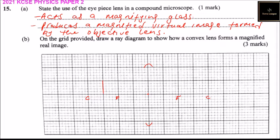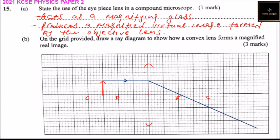We put our object in between the center of curvature and the focal point. We then draw the rays to show what happens. The first ray passes through the focal point on the other side. The other ray passes through the focal point on the near side. Therefore we have our image formed at the intersection of the rays.